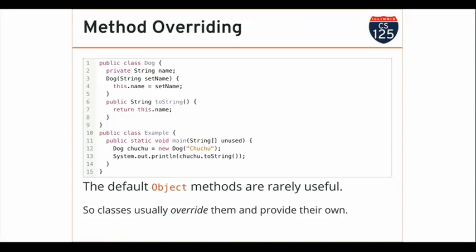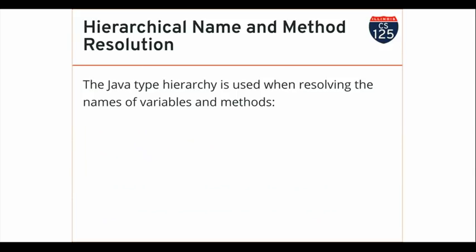Here's an example: the toString signature is a public method returning a String that takes no arguments. So I might say that when I print off a dog object, what I really want to know is its name — that's what I return. Now if I do System.out.println on a reference to a dog, I'll see the name. The question of why not just create a getName method — we'll come back to that.